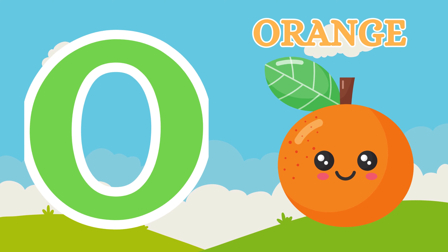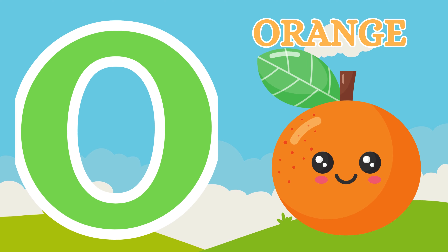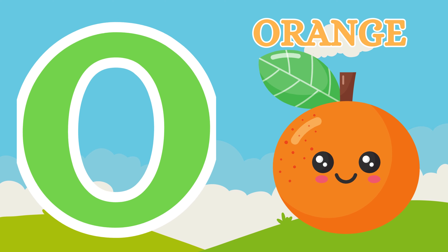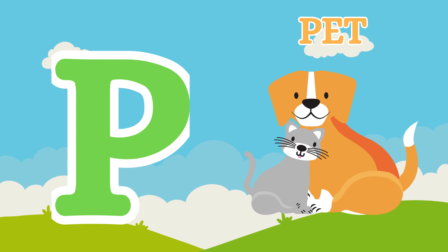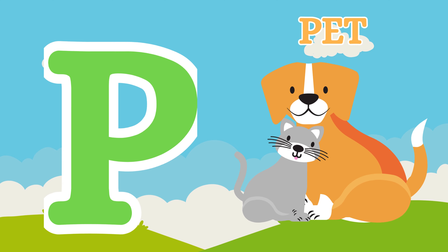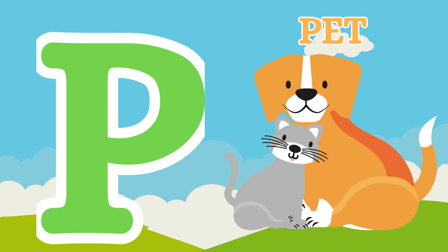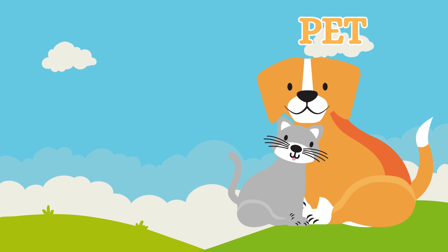O is for Orange. O, O, Orange. P is for Pet. B, B, Bat.